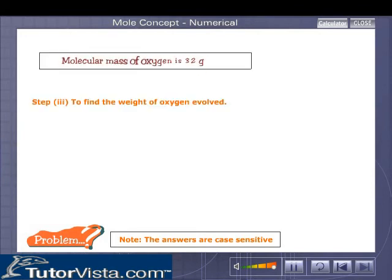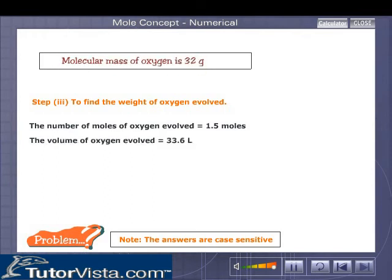We now move on to step three: to find the weight of oxygen evolved. We have the number of moles of oxygen equal to 1.5 moles. The volume of oxygen evolved is equal to 33.6 liters. What is the mass of one mole of oxygen? Key in the value.